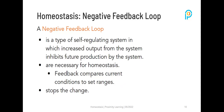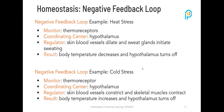A negative feedback loop is a type of self-regulating system in which increased output from the system inhibits future production by the system. It is necessary for homeostasis, comparing current conditions to set ranges — basically, it stops the change. An example is heat stress: the thermoreceptors act as the monitor, the hypothalamus is the coordinating center, and the skin blood vessels dilate while sweat glands initiate sweating as the regulator, resulting in decreased body temperature.